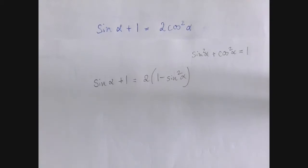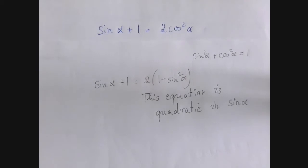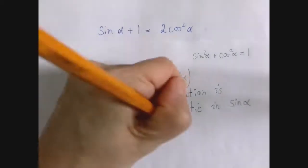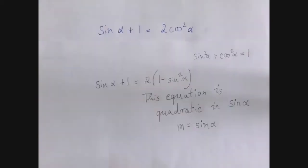This is what we refer to as quadratic in sine alpha. What that means is that if we introduce a new variable, say m, then this equation, once we rewrite it in terms of m, will become simply just a quadratic equation.